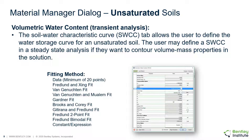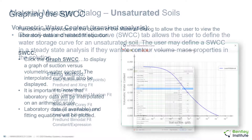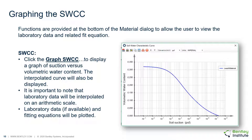The Fredlund and Xing fit provides the best estimate at high suctions. It is also worth noting that bimodal behavior can be represented in the soil. It is often helpful for the user to graph the soil water characteristic curve to confirm the behavior as suction changes. Clicking on the graph SWCC button results in a graph being displayed. Laboratory data will be interpreted on an arithmetic scale but plotted on a logarithmic scale, showing both the experimental data and the curve fit data.